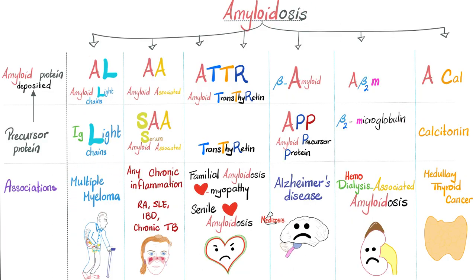Different types of amyloidosis: if I have multiple myeloma, the protein that is deposited is the AL protein — amyloid light chain protein. The precursor was the immunoglobulin light chain. If I have any chronic inflammation, such as rheumatoid, lupus, inflammatory bowel disease (which includes Crohn's or ulcerative colitis), chronic tuberculosis, or sarcoidosis, then the amyloid protein being deposited is the amyloid-associated protein, or simply AA protein. The precursor was serum amyloid-associated protein.